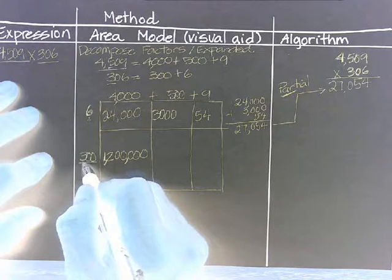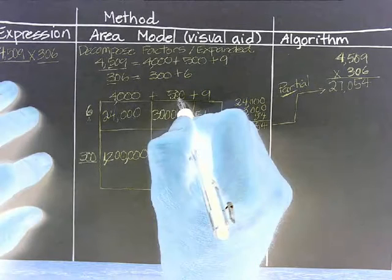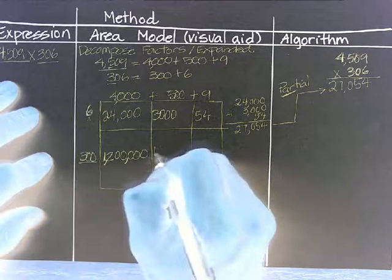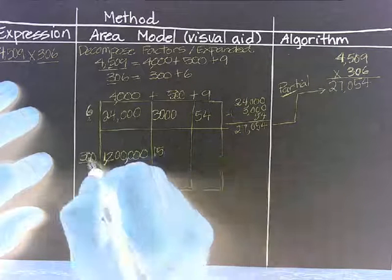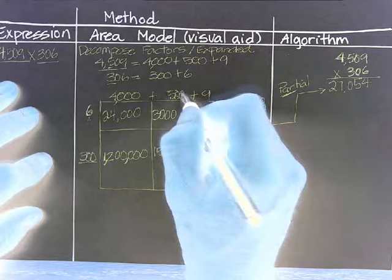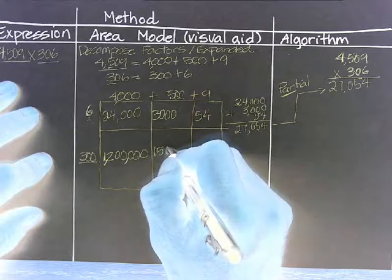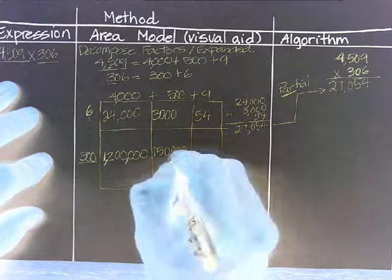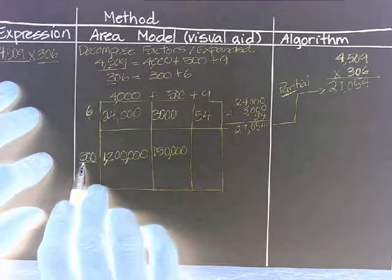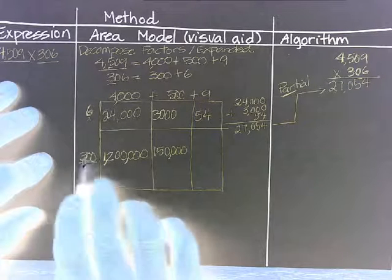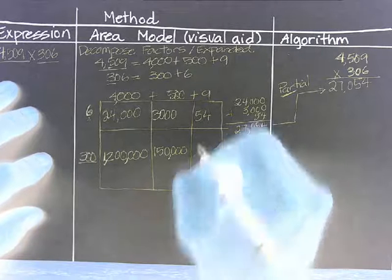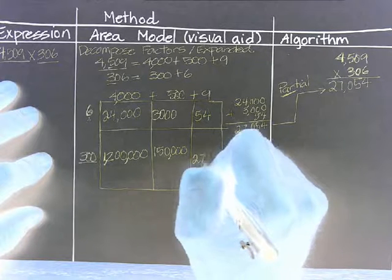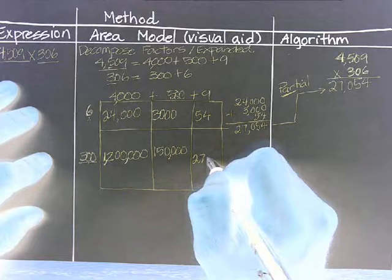Multiply 300 times 500. That will be 3 times 5 equals 15. And we have 1, 2, 3, 4. So that number is going to be multiplied by 10, 4 times. Now 300 times 9. 9 times 3 equals 27. And we have 2 multiplied by 10 twice. That's 0, 0.